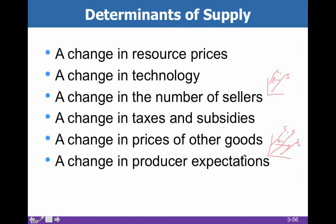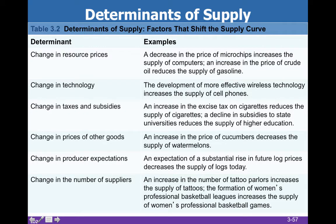And finally, a change in producer expectations. If producers believe that prices are going to change in the future, then they will behave accordingly. If they believe that prices are going to go up, then they'll start producing more today. Here's another really good chart — this is a great study tool for you. You've got your list of determinants and your list of examples of those determinants. You have the same looking thing in demand, and I really recommend that you pay good attention to those two.